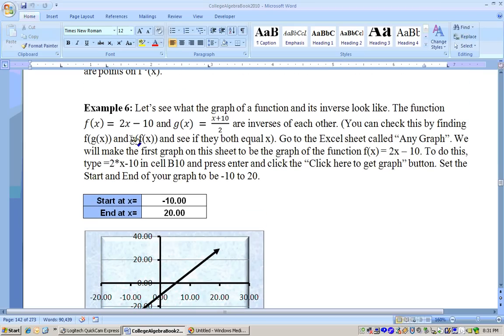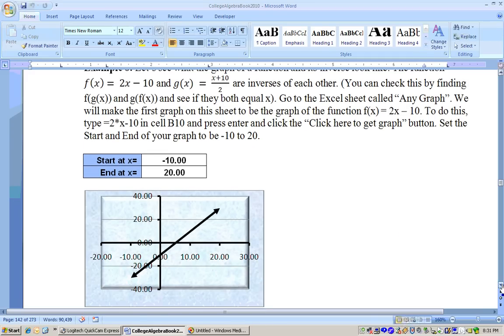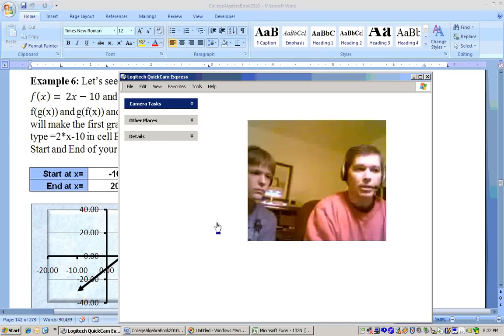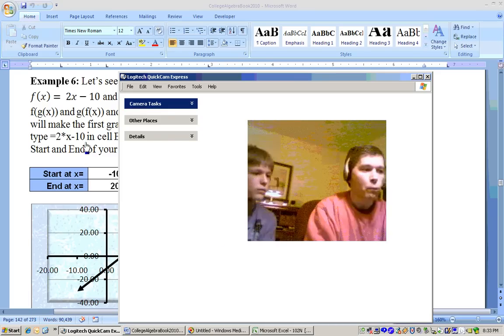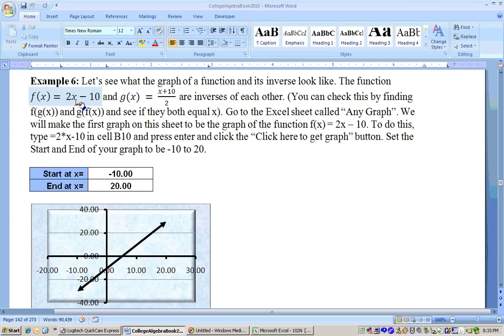Here are two functions that are inverses of each other, and you could tell because this one we multiply by 2, then subtract 10, and here we add 10, then divide by 2. So they're clearly inverse functions. And what I did is I went to the Excel sheet, and I went to the sheet called AnyGraph. Let's go ahead and take a look at what these graphs look like of these inverse functions. Let's go ahead and graph these two functions. I'm going to graph at least two functions on the same graph, and the best sheet to do that on is the AnyGraph sheet.